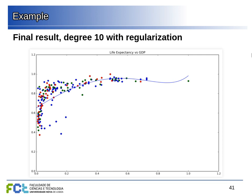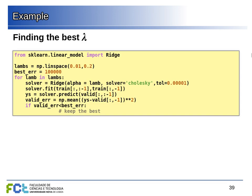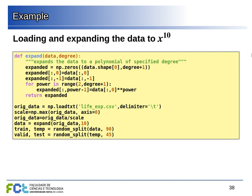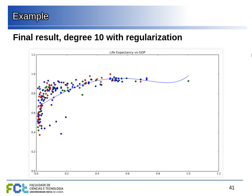Using a degree-10 polynomial with ridge regression, the curve is forced to be smoother and no longer goes wildly around the data points — in contrast to the unregularized version. By giving some penalty to the size of the parameters, we constrain the polynomial to follow a more reasonable shape.